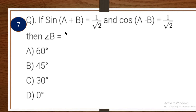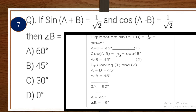Next one: if sin(A + B) = 1/√2 and cos(A − B) = 1/√2, then find angle B — option A: 60°, B: 45°, C: 30°, D: 0°. Explanation: sin(A + B) = 1/√2 means A + B = 45°; cos(A − B) = 1/√2 means A − B = 45°. Adding: 2A = 90°, so A = 45° and B = 0°. The correct answer is D.